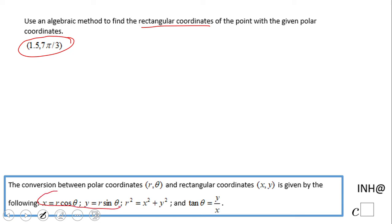How we're going to do that is right here. You just need these two formulas to change. The first one will be x equals r cosine theta. So in our case it's going to be x equals 1.5 cosine of 7π over 3.